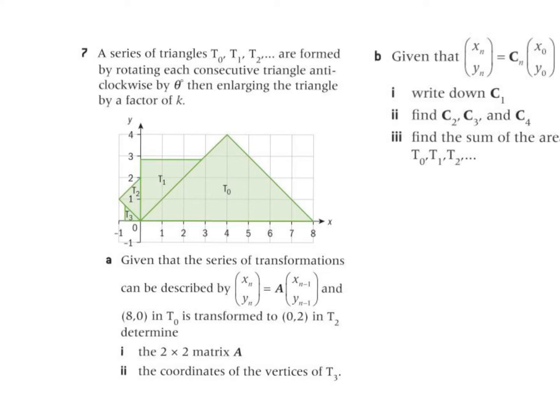In this problem, a series of triangles T0, T1, T2, and so on are formed by rotating each consecutive triangle anti-clockwise by theta, then enlarging it by a factor of k. Enlarging by a factor here actually means making it smaller, so k will be a fraction. Given this series of transformations, a point is described by some matrix A times the initial point.